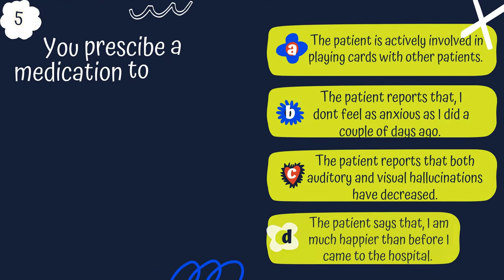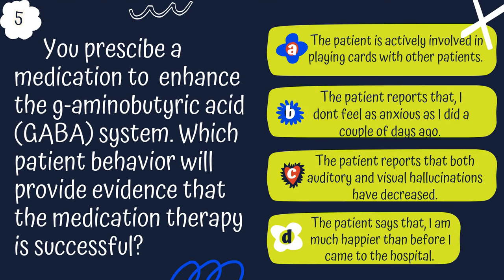Question 5. You prescribed a medication to enhance the GABA system. Which patient behavior will provide evidence that the medication therapy is successful? A. The patient is actively involved in playing cards with other patients. B. The patient reports not feeling as anxious as a couple of days ago. C. The patient reports that both auditory and visual hallucinations have decreased. Or D. The patient says, I am much happier than before I came to the hospital.